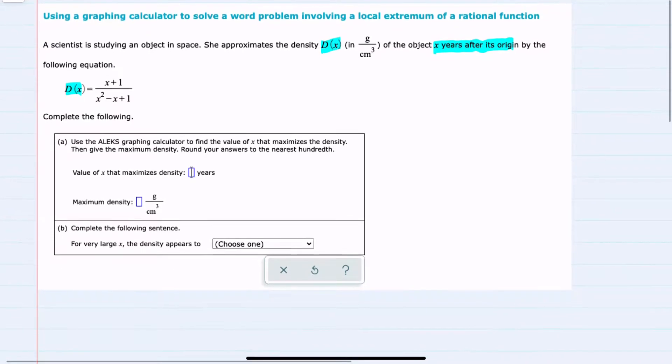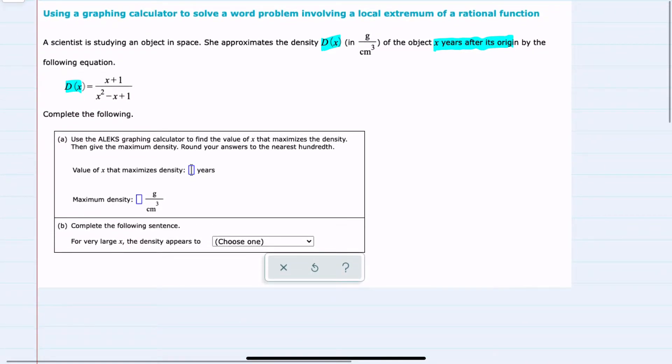First, to use a graphing calculator to find the value of x that maximizes its density. So at what time does it have maximum density? And then what is that maximum density?